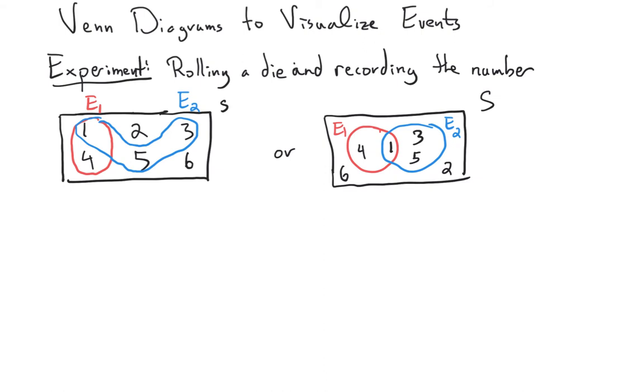You could also do it like this. So this is the exact same information in this diagram, just arranged a little differently. So here's the circle representing E1, the circle representing E2. I know 1 and 4 are in E1, 1, 3, and 5 are in E2. 1 was in both, so it's in the intersection of E1 and E2, and 2 and 6 are outside both events here, but they're still in our sample space, S. So that's a good idea for visualizing events.